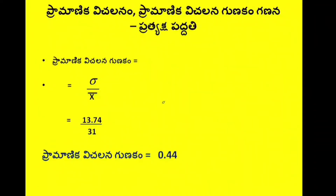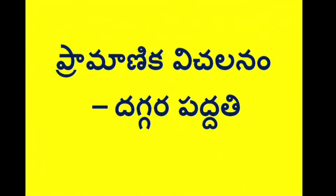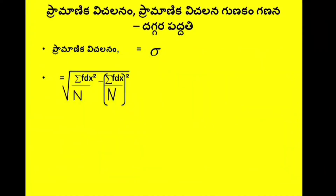We are doing the shortcut method. In the shortcut method, we calculate standard deviation using the formula: root of sigma fdx² by N minus sigma fdx by N, whole square.